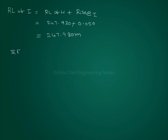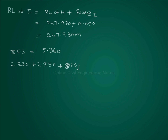Next, sum of fore sights is equal to 5.360. So 2.230 plus 2.350 plus fore sight at J equals 5.360, from which fore sight at J is equal to 0.780 meters.